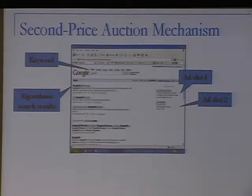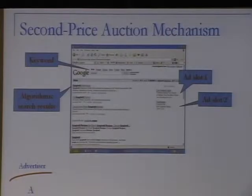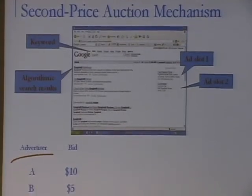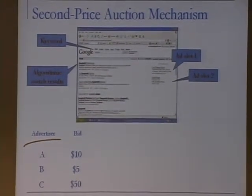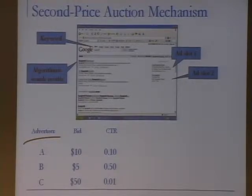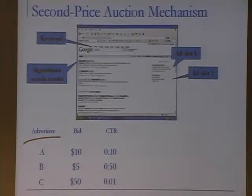I'll describe the auction rules through an example with two ad slots and three advertisers. Each advertiser submits the amount they're willing to pay per click for a given keyword. In my example, advertiser A has $10 value per click, B has $5, and C has $50. Each advertiser also has an associated click-through rate — a quality score that the search engine learns — which estimates the probability the user will click on that ad.